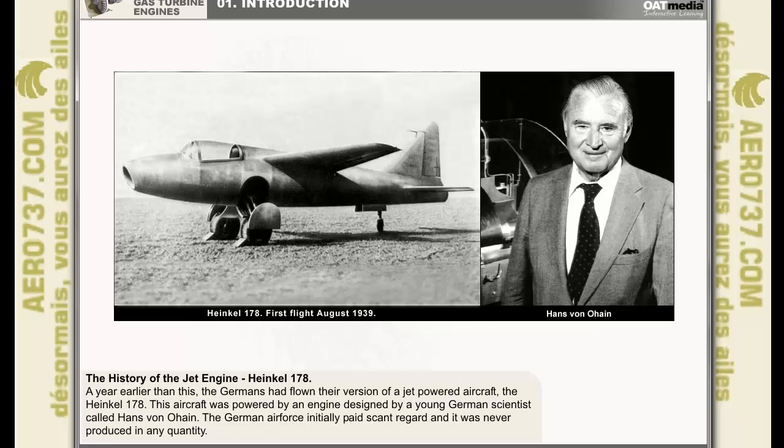Although the Italians were unaware of it, a year earlier than this the Germans had flown their version of a jet aircraft, the Heinkel 178. This aircraft was powered by an engine designed by a young German scientist called Hans von Ohain. Despite the relatively sparkling performance for that era, it could travel at speeds in excess of 400 miles per hour, the German Air Force initially paid it scant regard, and it was never produced in any quantity.